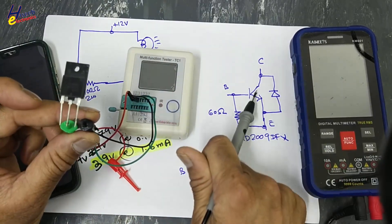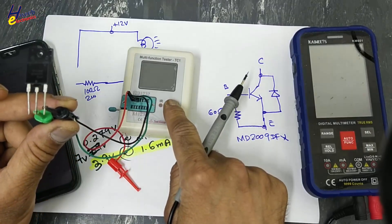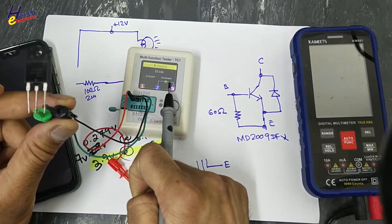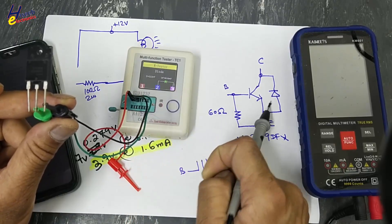Let's check between collector and emitter. Now if you check between collector to emitter it will show one diode, this diode. Yes, 616 millivolt forward voltage.